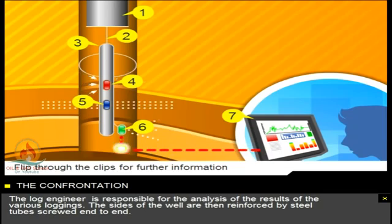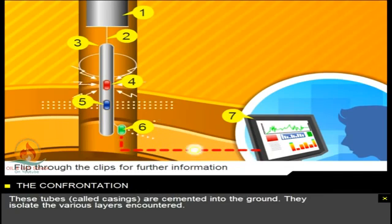The sides of the well are then reinforced by steel tubes screwed end-to-end. These tubes, called casings, are cemented into the ground. They isolate the various layers encountered.